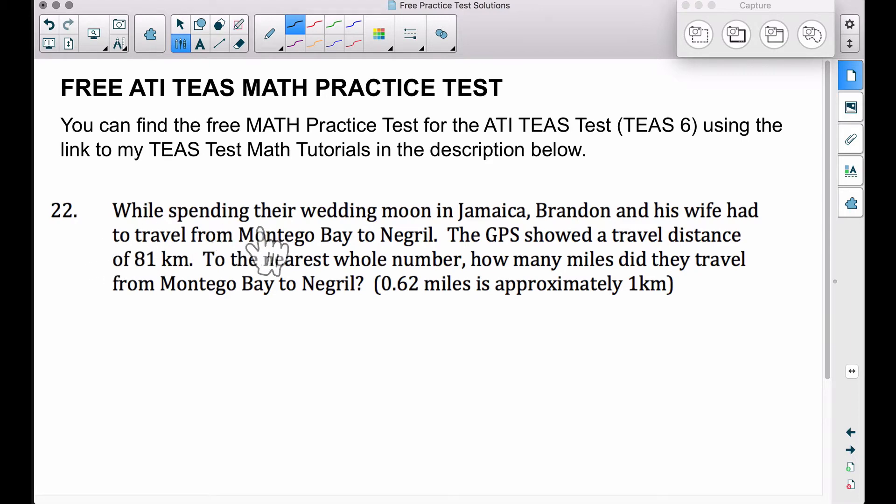Number 22, while spending their wedding moon in Jamaica, Brandon and his wife had to travel from Montego Bay to Negril. The GPS showed a travel distance of 81 kilometers. To the nearest whole number, how many miles did they travel from Montego Bay to Negril? Here's the conversion: 0.62 miles is approximately one kilometer.